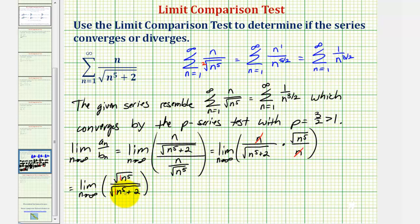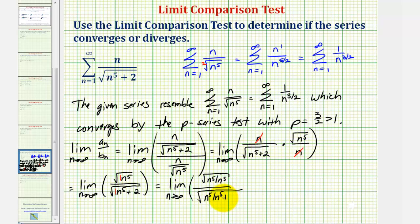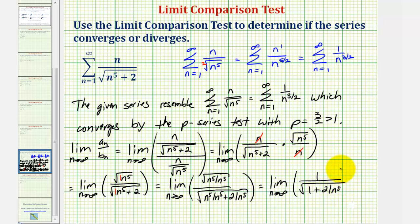Alternatively, we can divide everything by the highest power of n in the denominator, which is n to the fifth under the square root. This gives the limit as n approaches infinity of the square root of n to the fifth divided by n to the fifth, which simplifies to one, divided by the square root of one plus two divided by n to the fifth. As n approaches infinity, two divided by n to the fifth approaches zero, and therefore this limit equals one divided by the square root of one, which is just one.